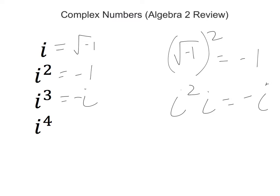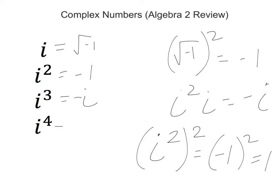And then if you take i to the fourth, you could think of that as i squared squared. So that's negative 1 squared, and that gives you positive 1. And what happens is that as you keep going beyond that — say i to the fifth — i to the fifth could be i to the fourth times i, which is just equal to i, because that was positive 1 times i.